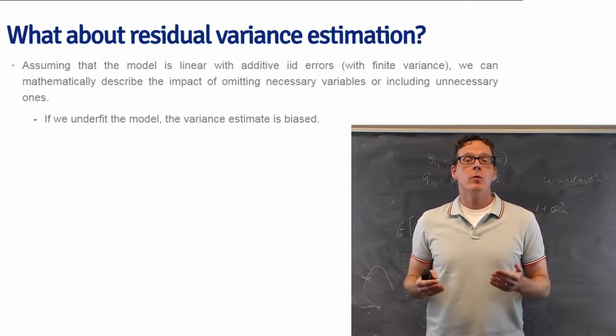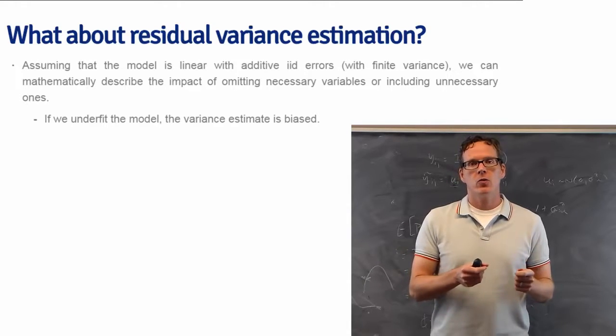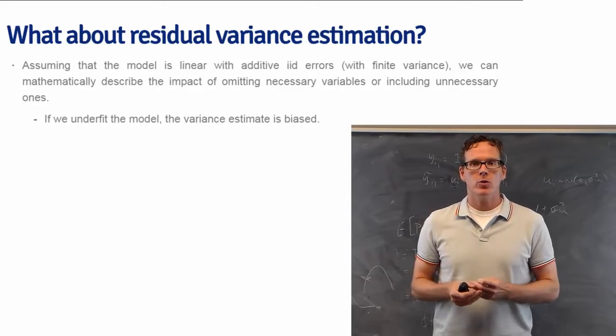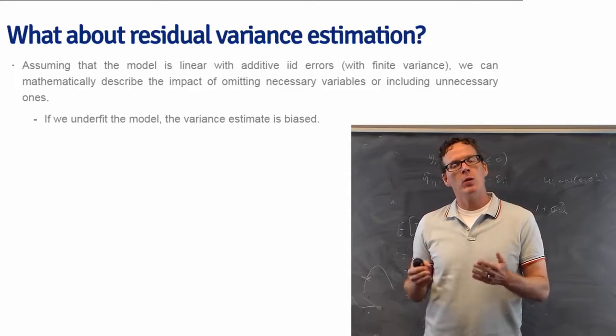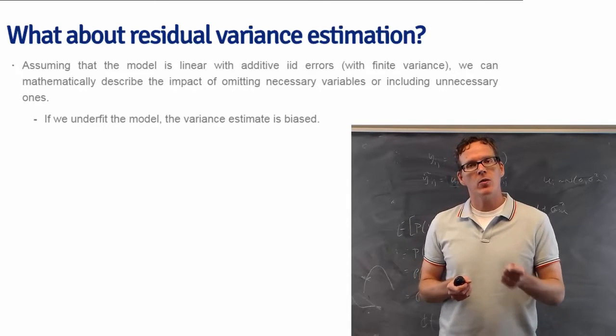So up to this point, all that we've talked about is the impact of unnecessary or necessary included variables on our regression coefficients. But there's one other parameter that we estimate in a regression model: the residual variance, sigma squared.